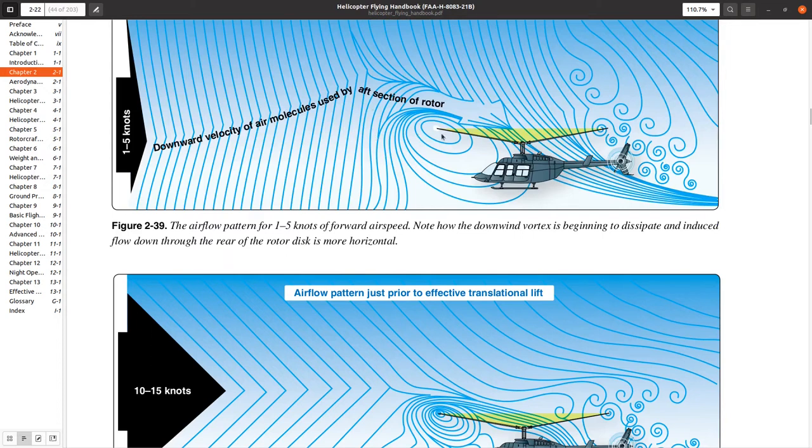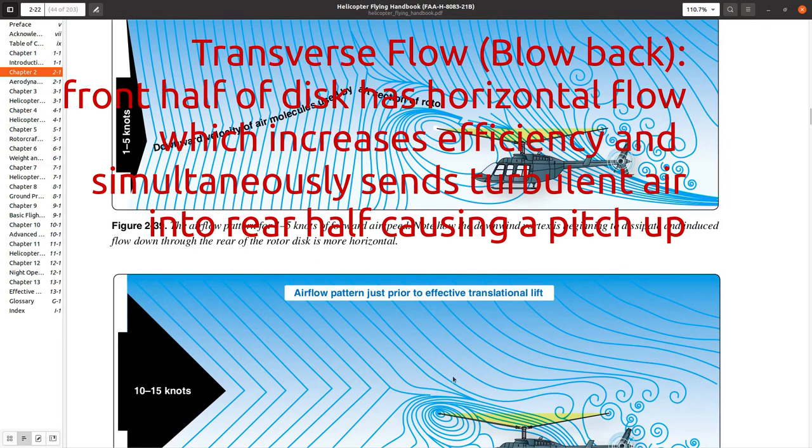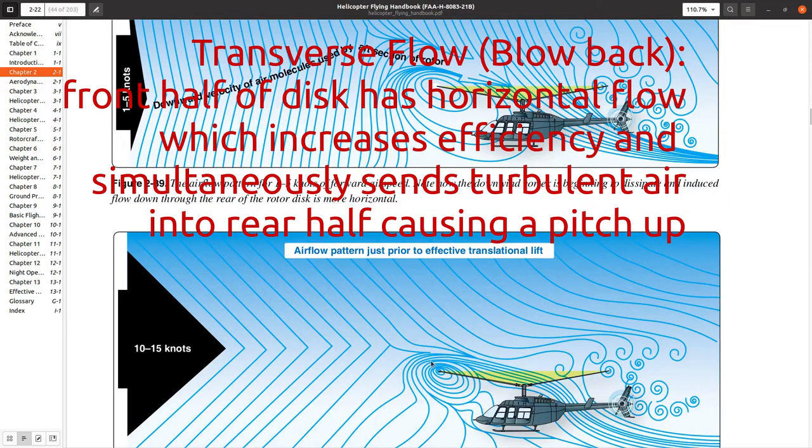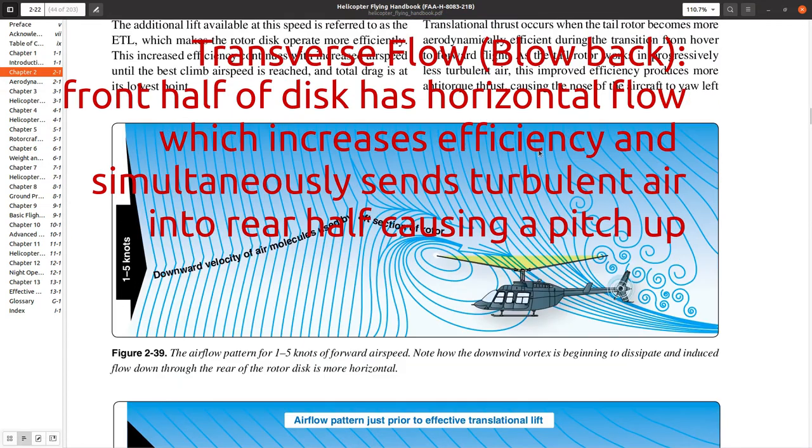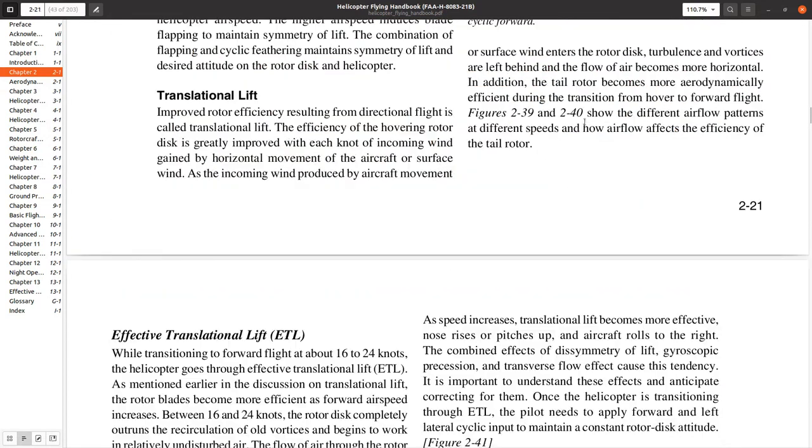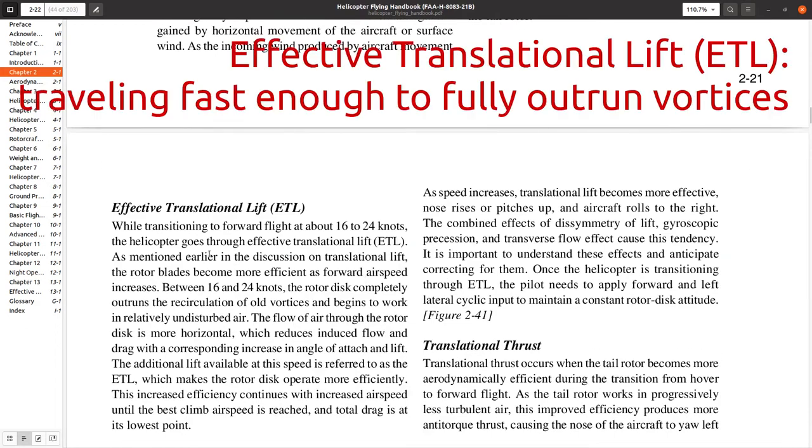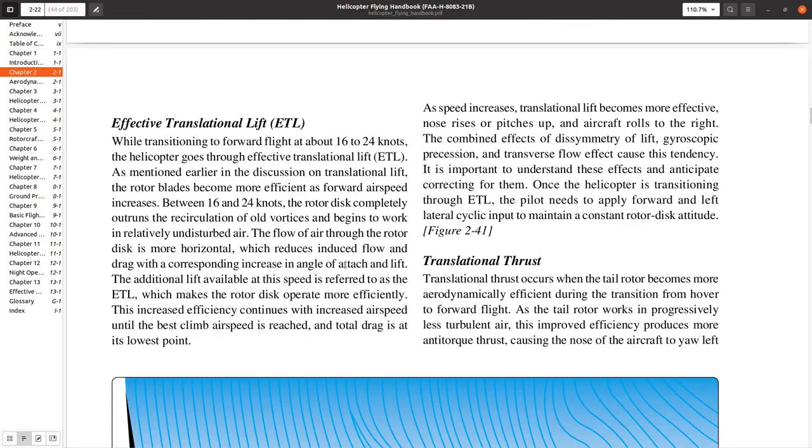So first, you'll notice this thing is going to tilt to the right. Then you're going to notice that it's going to try to lift the leading edge of the rotor, if you will, the front half. And that's going to cause what we call blowback. So once you're going to have that, it's going to try to push back and then you get to what you want. ETL speed. So what's ETL speed? ETL speed, effective translational lift. And it's usually between 16 to 24 knots.